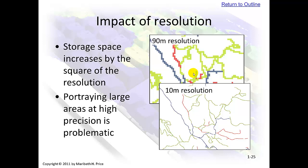Impact of resolution. If we look at these two images of a similar area, in this one it's 90-meter resolution — each cell is 90 meters in length — whereas in this image each cell is 10 meters. So there are approximately nine 10-meter cells within one 90-meter cell. You can tell it's going to be choppy at 90-meter resolution. Portraying large areas at high precision is problematic because there's a lot of data.